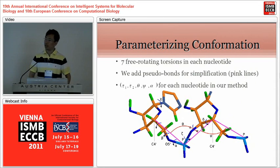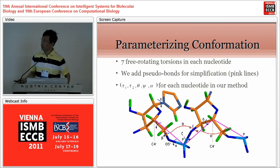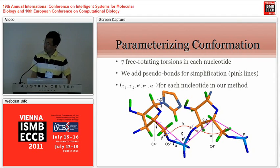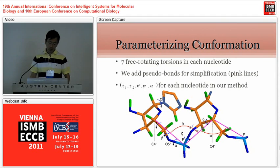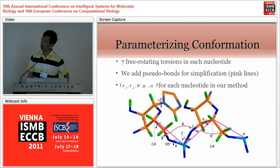Before applying any mathematical methods, we describe the practical problem using vectors and matrices. This picture shows the conformation of two nucleotides. There are seven free rotating torsion angles along the backbone, indicated by alpha, beta, gamma, delta, epsilon, zeta, and chi. The chi torsion connects a sugar ring to the base.